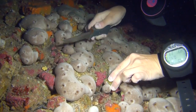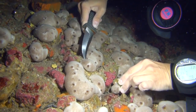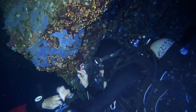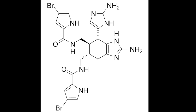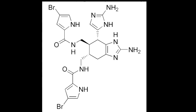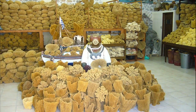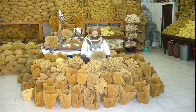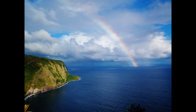Sponges can produce chemical compounds with useful pharmaceutical properties such as anti-tumor, anti-infective, and anti-inflammatory properties. Many sponges also produce toxins to deter other organisms from growing near them. Natural sponges are still harvested for personal, industrial, and artistic use.